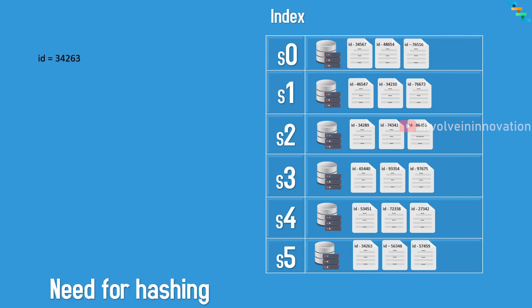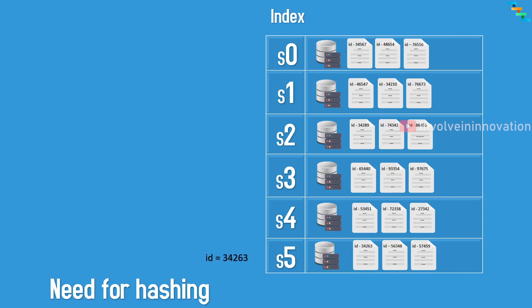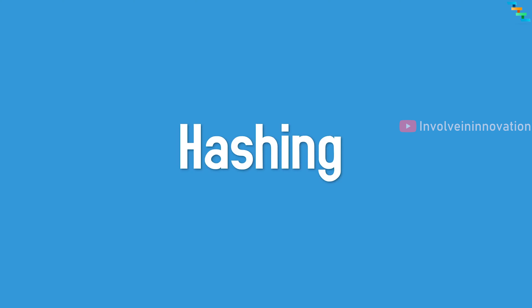For example, to retrieve data with ID 34263, you need to start a linear search from server 1, check whether it contains that data, and if not, go to server 2, server 3, server 4, then server 5 — where you finally find it. This is not acceptable in today's fast-moving world where you need millisecond latency. In real systems with hundreds of servers, you can't retrieve data with low latency this way. We really need a strategy to know which server holds the data — that's why we need hashing.